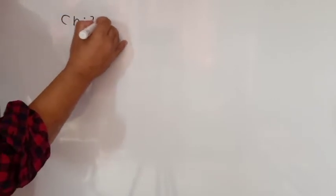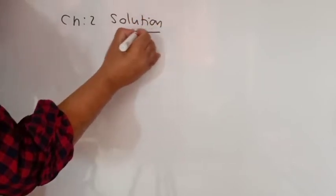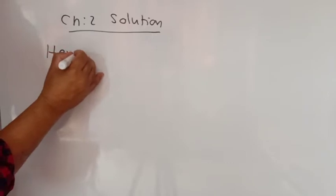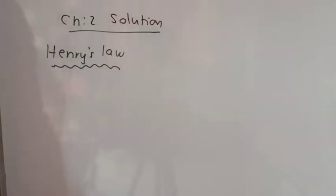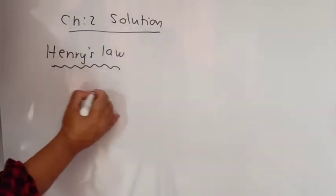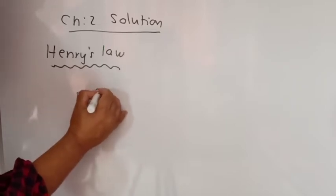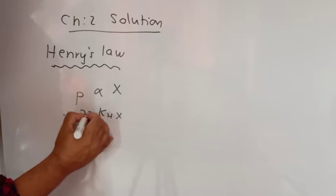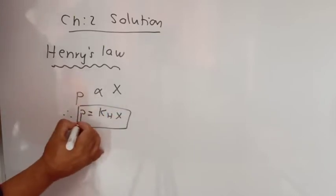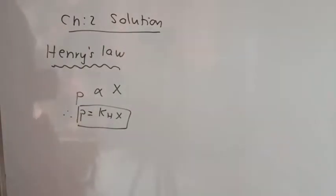Today we are going to do numericals of Chapter 2, that is Solutions. The topic is Henry's Law. Henry's law states that the solubility of a gas is directly proportional to the partial pressure of the gas. If we express solubility using mole fraction, then P is proportional to χ. This is Henry's equation: P = KH × χ, where P is partial pressure, KH is Henry's constant, and χ is the mole fraction.